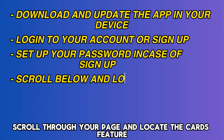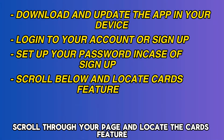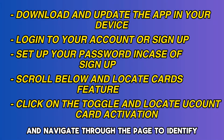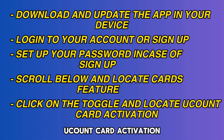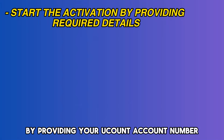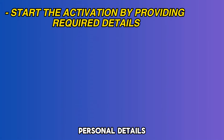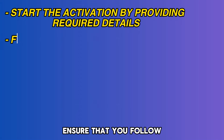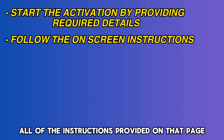Scroll through your page and locate the Cards feature. Click on the toggle switch and navigate through the page to identify UCount card activation. Start the activation process by providing your UCount account number, personal details, and a code on your card. Ensure that you follow all of the instructions provided on that page.